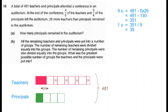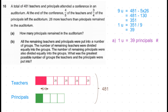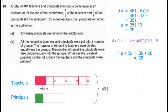How many principals remained in the auditorium? One unit of principals remained, which is 39 principals. Moving to part B: all remaining teachers and principals were put into groups. The remaining teachers were divided equally into the groups, and the remaining principals were also divided equally. What was the greatest possible number of groups? First, we find the number of remaining teachers: one unit plus 26 equals 39 plus 26, which is 65 teachers remaining.